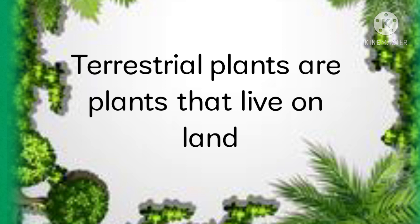Terrestrial plants are plants that live and adapt on land. They grow in soil in places like farms, forests, mountains, gardens, and even in pots. Some plants have big trunks while others have soft and fleshy stems. They use their body parts to survive in their habitat.